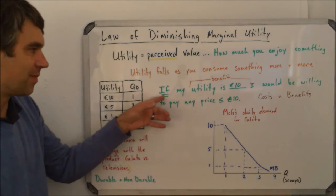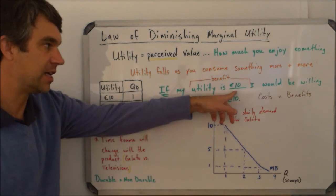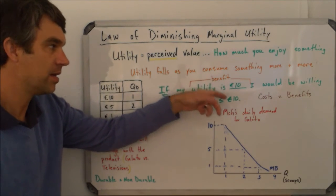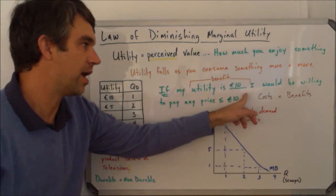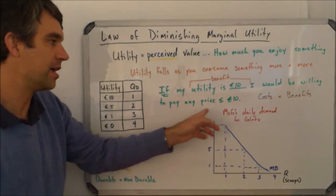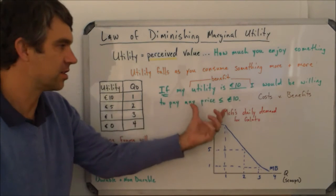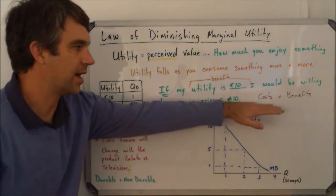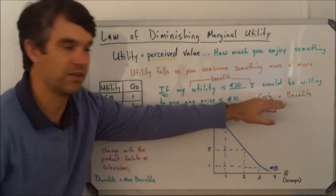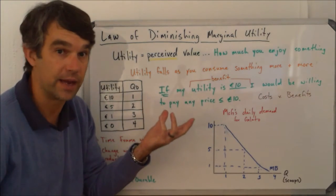So the idea is that if my utility is a certain amount, say 10 euro, that's my benefit. Well, if my utility is a certain amount, I would be willing to pay any price up to or equal to whatever my benefit is, so that's my cost. And remember in economics, we're always making a cost versus benefit comparison to look at why decisions get made.